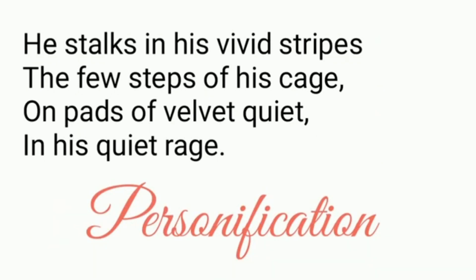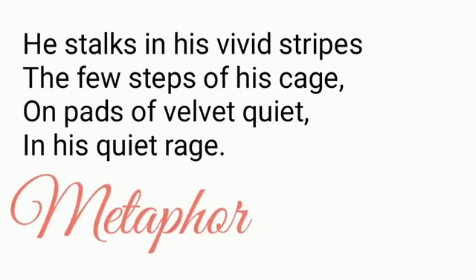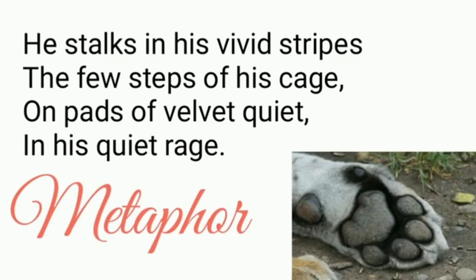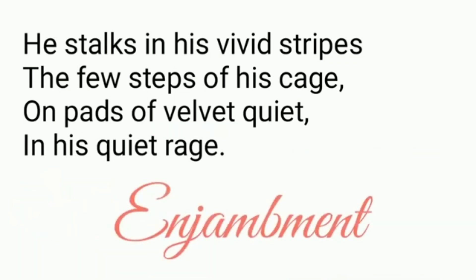The next poetical device used is personification, where the tiger is personified. Instead of using 'it,' the poet has used 'he' for the tiger. The next poetical device is metaphor — the soft skin under the tiger's paw is compared to velvet. Then there is enjambment, which means a sentence continuing into the next line without any punctuation mark. The first line is enjambment because it continues into the second line, where there is a comma at the end.